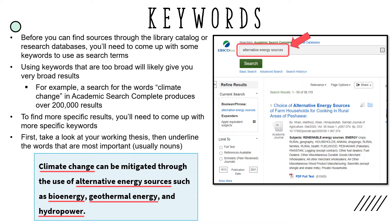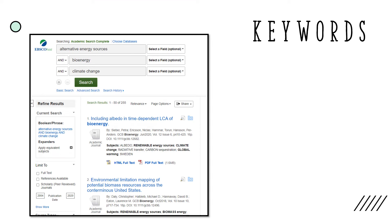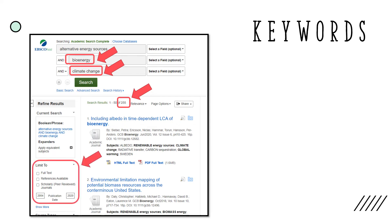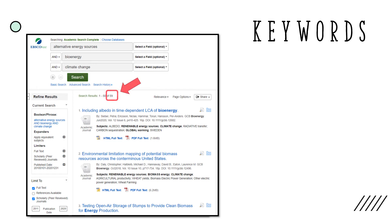A search for 'alternative energy sources' gives you over 38,000 results. To narrow these results down even more, click on Advanced Search. Advanced Search lets you add more search boxes so that you can search for additional keywords along with your original keywords. By adding 'bioenergy' and 'climate change' underneath 'alternative energy sources,' the database will now search for sources that contain all three keyword phrases. This new search gives you 255 results. You can also limit your results to only sources that are full-text, peer-reviewed, and published within a specific date range, such as within the last 10 years. By doing a new search with these changes, you get 59 results, which is a much more manageable number of sources to sort through.